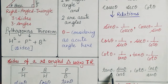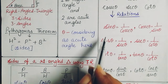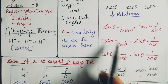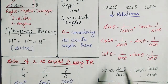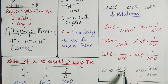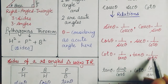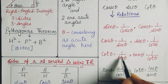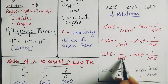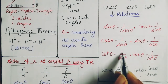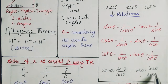Tangent theta and cot theta also have different formulas in terms of sine and cos. Tangent theta is always equal to sine theta upon cos theta. And since cot theta is the reciprocal of tangent, cot theta equals cos theta upon sine theta. These are the relations among the six trigonometric ratios.